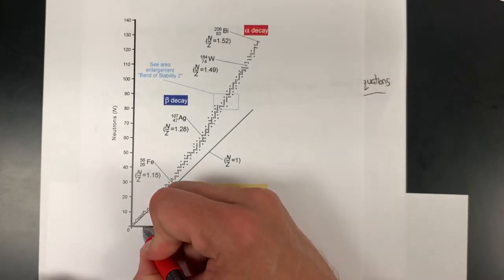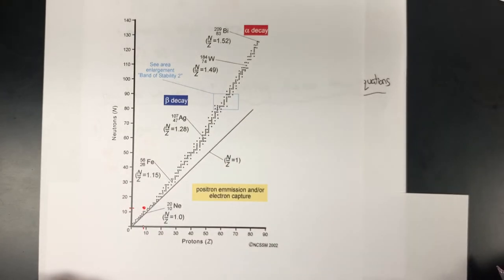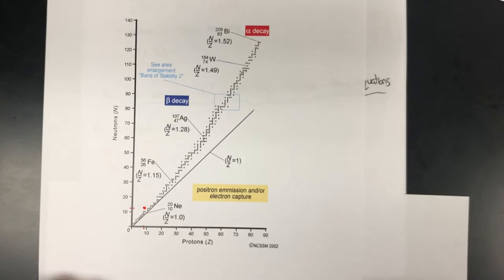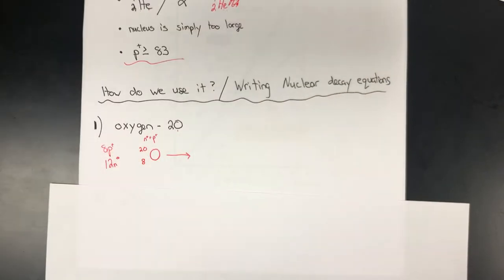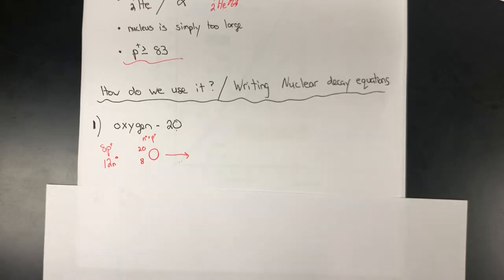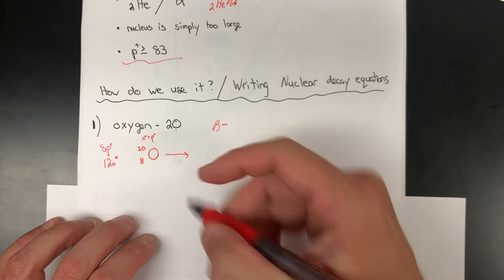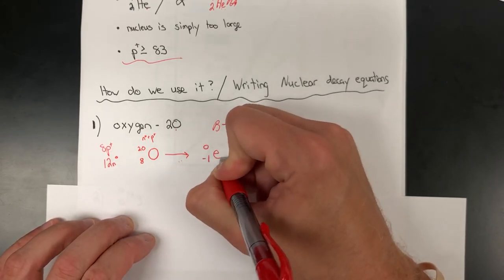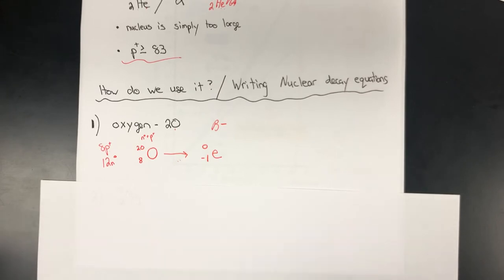Going over 8 protons and up 12 neutrons, I find a point right around here. That looks like it is off the band of stability, lying within the beta decay region. So we draw the nuclear decay arrow. We've already determined it is a radioactive isotope. Given that it is in the beta region and will release a beta particle, we write a beta particle on the product side: 0 over negative 1 E. As the nucleus ejects an electron, we take a neutron and essentially turn it into a proton.